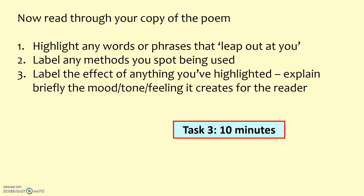It is now time to read through your copy of the poem. I'm referring to the booklet that you have been sent in the post — a paper booklet that says 'protest poetry, unseen poetry' on the front. Limbo is the first poem inside. You're going to want to grab a highlighter, because I want you to have a go for 10 minutes: pause this video, and as you read it, highlight any words or phrases which leap out at you or seem important. Secondly, label any methods that you spot being used. Finally, if you could label the effect of anything highlighted — choosing two or three things and explaining briefly the mood, tone, or feeling created, such as the repetition which happens throughout the poem.